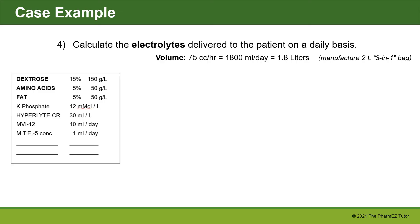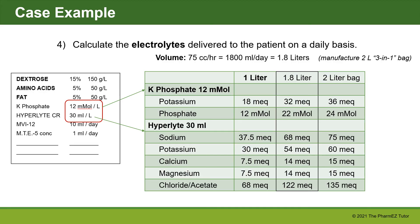To calculate electrolytes delivered daily, first look at potassium phosphate 12 millimoles per liter, which provides 12 millimoles of phosphate and 18 mEq of potassium per liter (using the 1.5× factor). Hyperlite 30 mL per liter is broken into individual electrolytes — sodium, potassium, calcium, and magnesium — per liter. Since the patient is receiving 75 cc/hr or 1.8 liters per day, each one-liter amount must be multiplied by 1.8. Total potassium delivered is 32 mEq from potassium phosphate plus 54 mEq from hyperlite, for a total of 86 mEq per day.